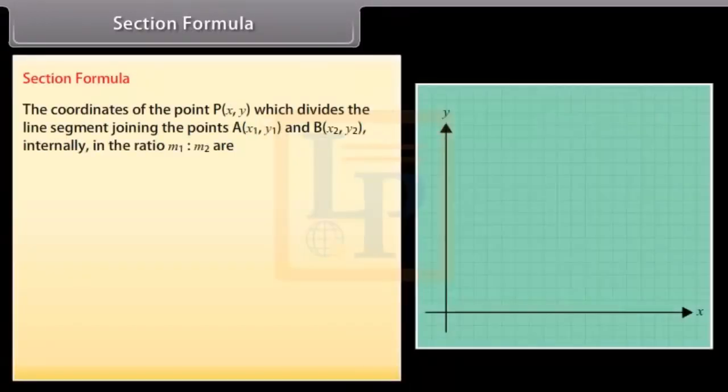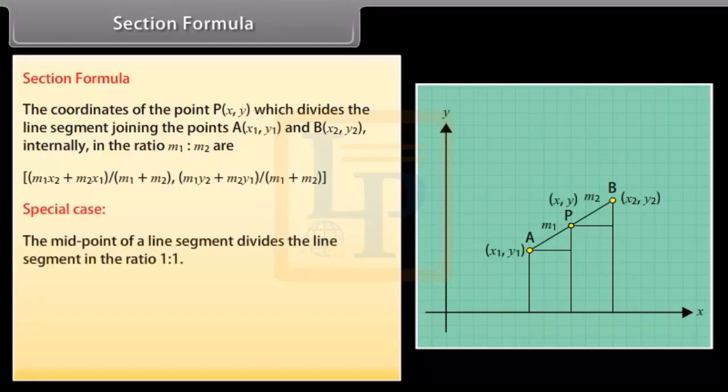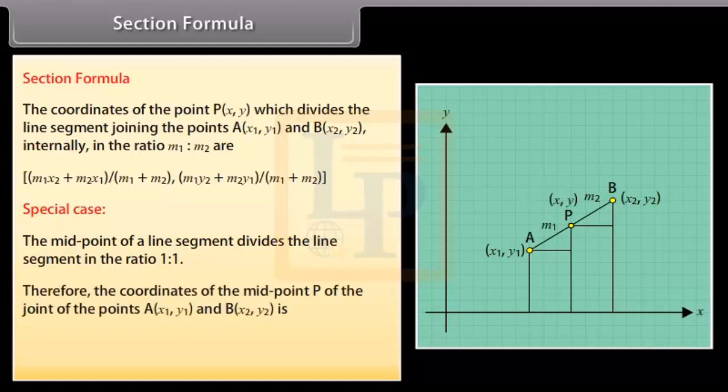Section formula. The coordinates of the point P(X,Y) which divides the line segment joining the points A(X1,Y1) and B(X2,Y2) internally in the ratio M1 is to M2 are M1X2 plus M2X1 by M1 plus M2, M1Y2 plus M2Y1 by M1 plus M2. Graphical representation is shown in the figure given below. Special case: the midpoint of a line segment divides the line segment in the ratio 1 is to 1. Therefore, the coordinates of the midpoint B of the joint of points A(X1,Y1) and B(X2,Y2) is X1 plus X2 by 2, Y1 plus Y2 by 2.